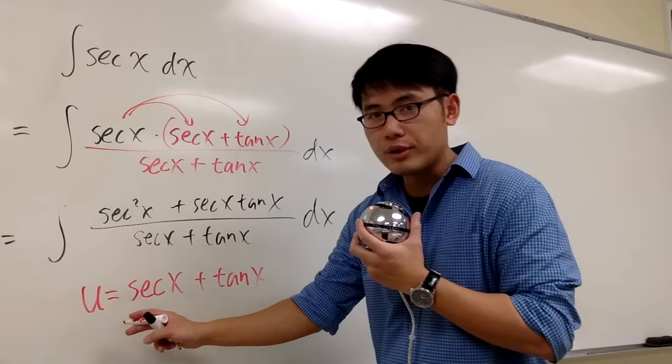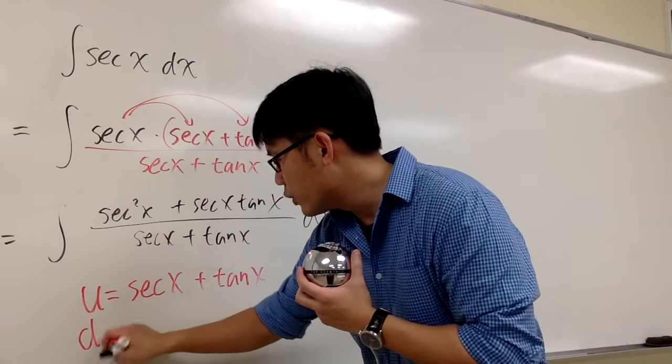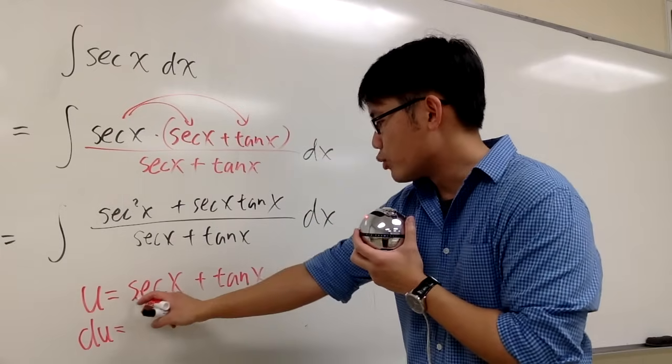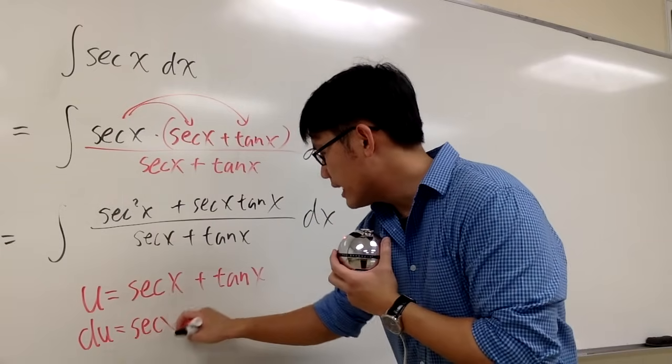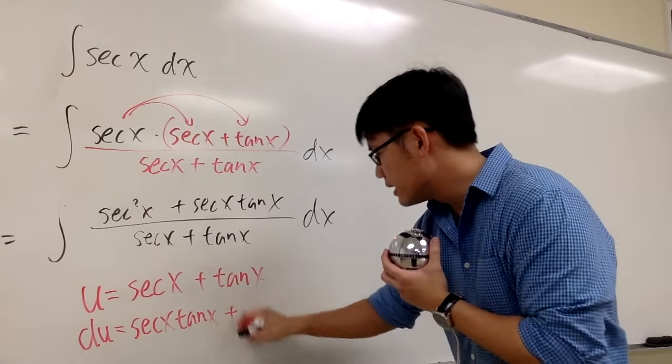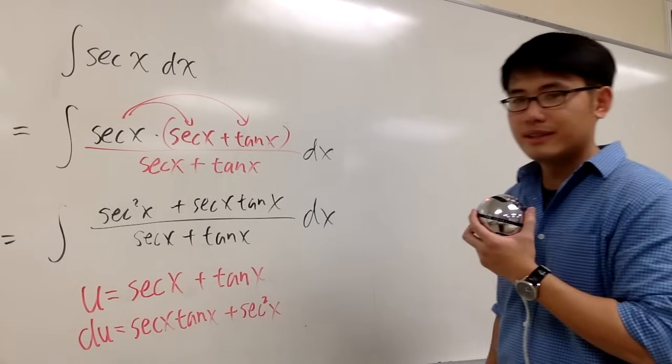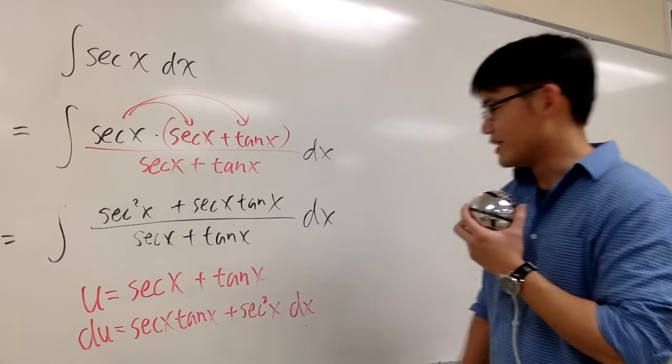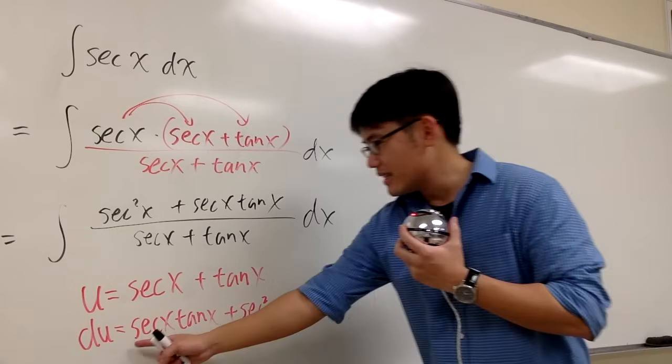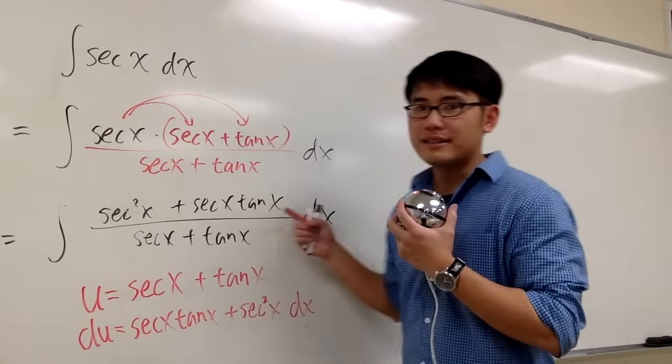And then the moment that you differentiate this equation, we get du equals to the derivative of sec x is sec x tangent x plus the derivative of tangent x is sec squared x. Well, let's put the d squared here as well. And look at this, the top are exactly the same.